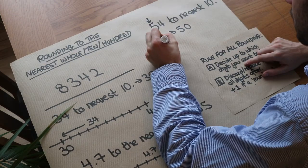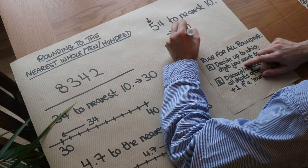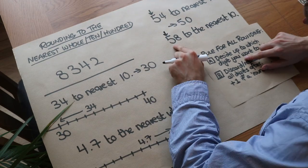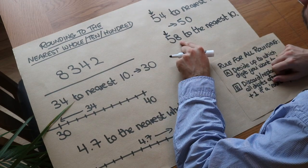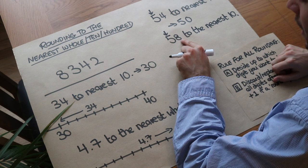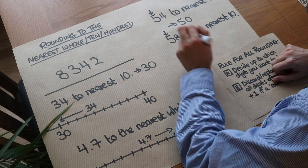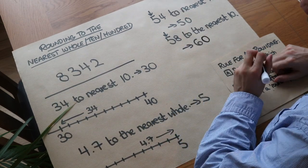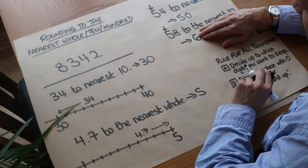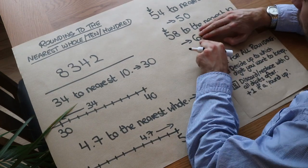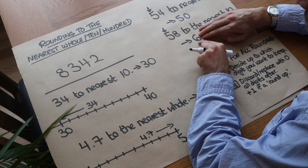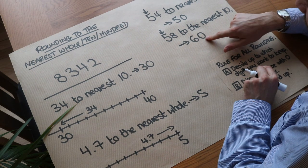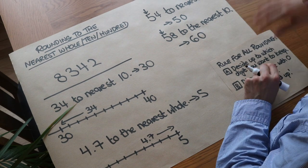If the next digit is greater than or equal to five, then the kept digit rounds up. For example, 58 to the nearest ten: we keep everything up to the tens digit and check the next digit after it. Eight is at least five, so that five goes up to six. We're replacing all units with zero - we can't just keep the six without the zero, otherwise it would be the units digit. So we put zero there to show zero units: 60.